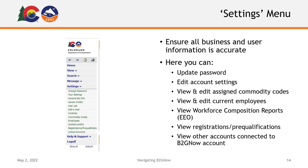Your Settings menu is where you will ensure that all of your information as a user and an organization is accurate and up to date. Here, you can update your account password, edit any account settings such as your contact information, address, and account preferences, view and edit your general business information, view a list of any assigned commodity codes, view and edit your list of current employees, view your workforce composition reports, view your active or inactive registrations and prequalifications, and view any accounts you've connected to your B2GNOW account — for example, your LCP Tracker account. This will allow you to see all of the information for all organizations connected to you as a single user.